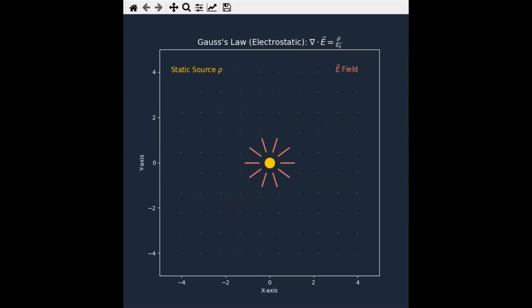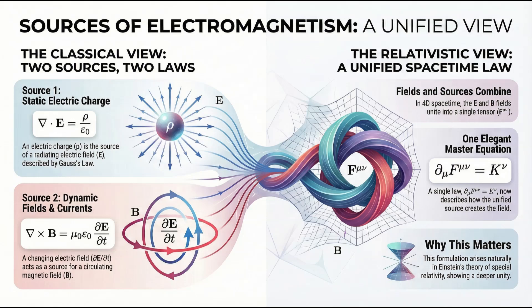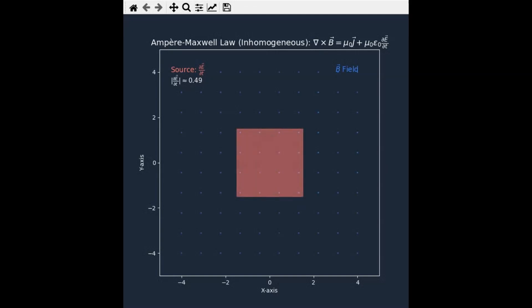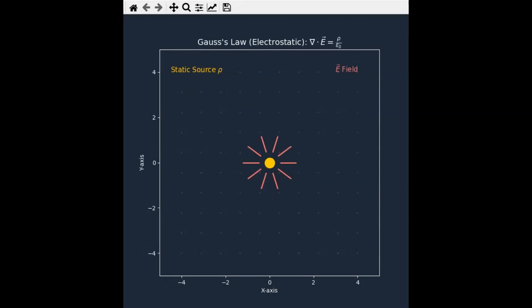And because of this, that whole mess of Maxwell's equations collapses down into one single elegant equation, showing this deep connection between space, time, sources, and fields. At the end of the day, electromagnetism isn't four messy equations. It's one elegant expression of space-time geometry.